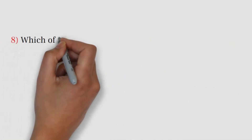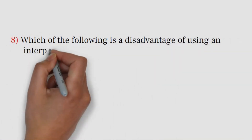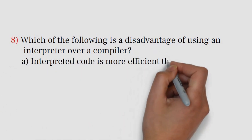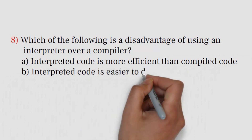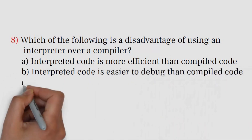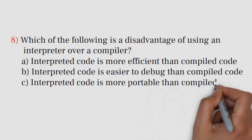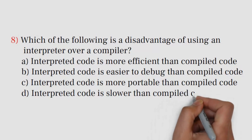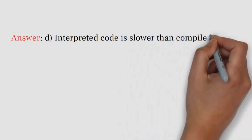Question number 8. Which of the following is a disadvantage of using an interpreter over a compiler? A. Interpreted code is more efficient than compiled code. B. Interpreted code is easier to debug than compiled code. C. Interpreted code is more portable than compiled code. D. Interpreted code is slower than compiled code. Answer: D. Interpreted code is slower than compiled code.